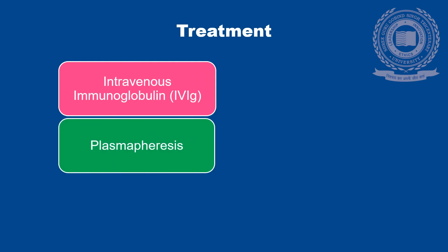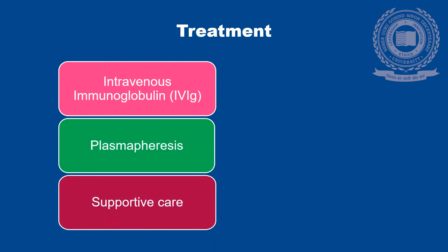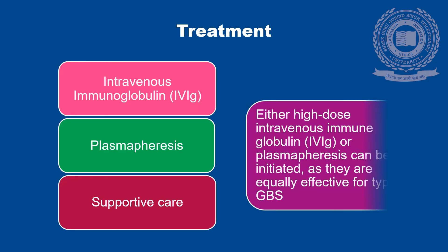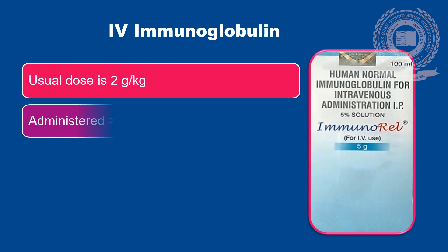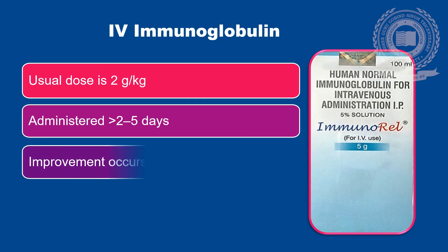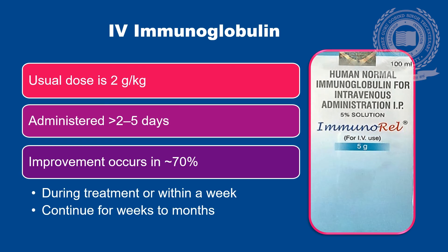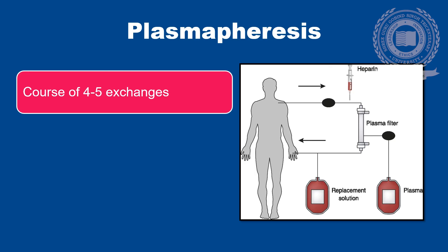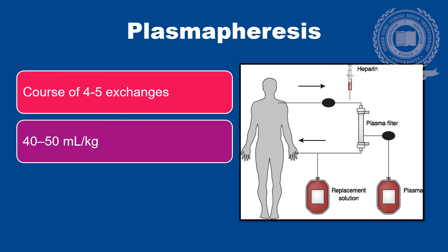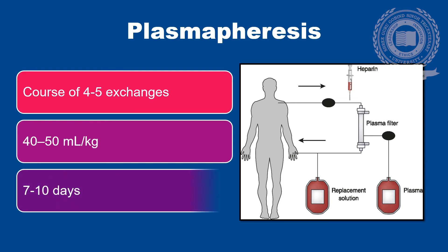Intravenous immunoglobulin, plasmapheresis, and supportive care are the main stays of treatment for patients who are suffering from Gulenbady Syndrome. Either high-dose intravenous immunoglobulin or plasmapheresis can be initiated as they are equally effective for typical Gulenbady Syndrome. Intravenous immunoglobulin is given in a usual dose of 2g per kg, administered over a period of 2 to 5 days. Improvement occurs in 70% of the patients either during treatment or within a week, and the improvement continues for weeks to months. Plasmapheresis involves a course of 4 to 5 exchanges, each consisting of 40 to 50 ml per kg of plasma, administered over a period of 7 to 10 days.